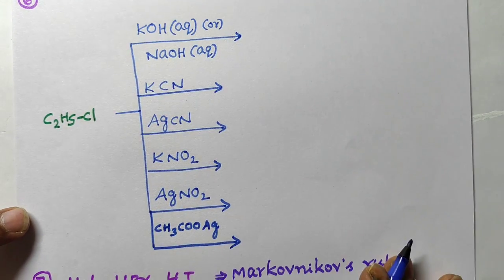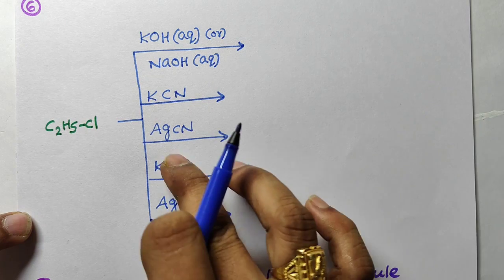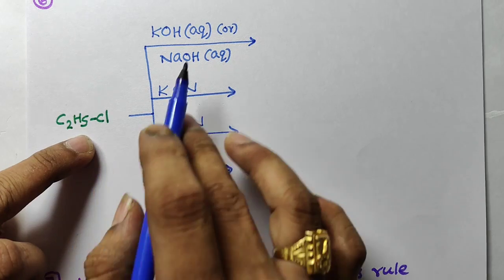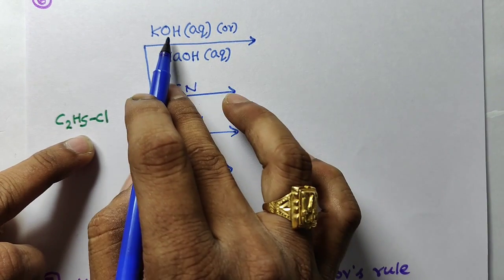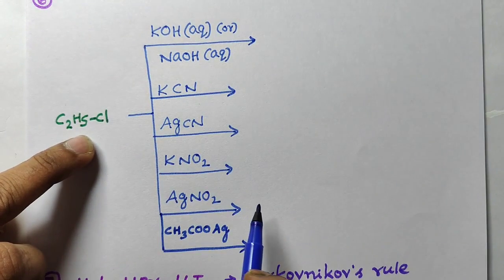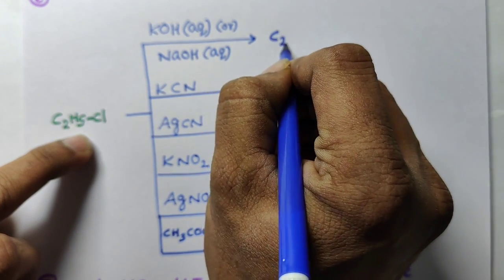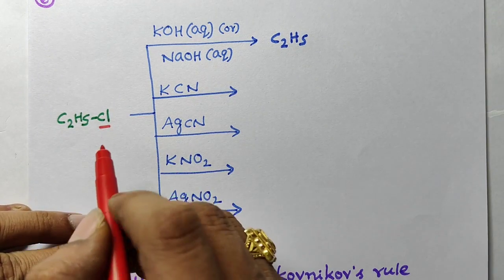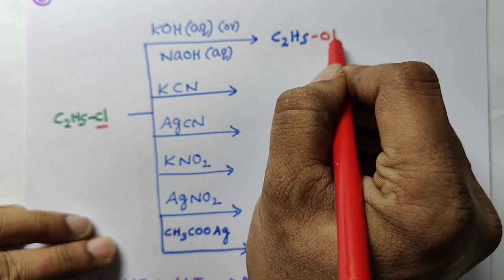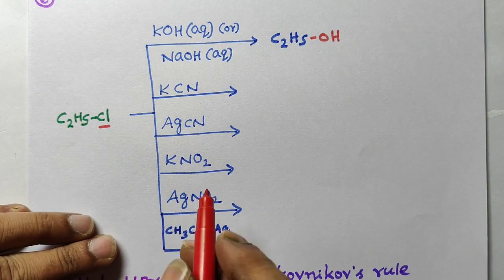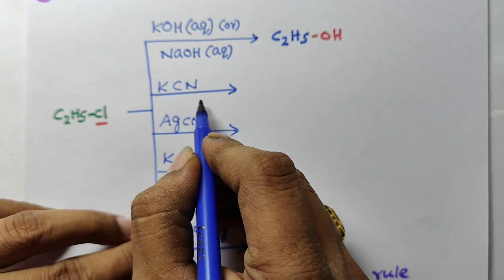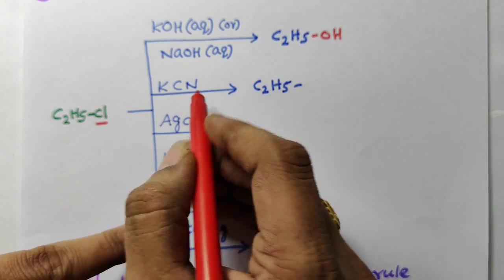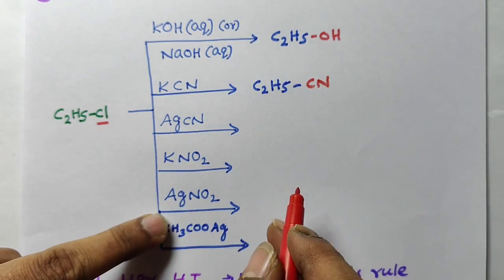Now I have covered reagents 1 through 6. So ethyl chloride reacts with these reagents. First: ethyl chloride reacts with aqueous KOH or aqueous NaOH — KOH dissolved in water, solvent is water. Here Cl⁻ is replaced by OH⁻, so ethyl alcohol is formed. Next: ethyl chloride treated with KCN — here Cl⁻ is replaced by CN⁻ to form a nitrile.